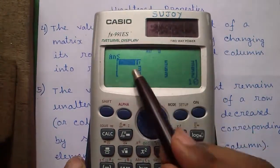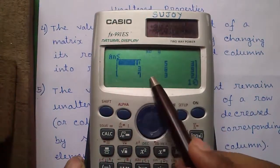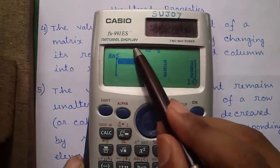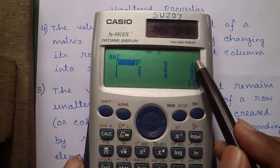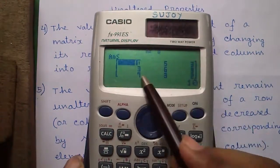This is called row 1, this is row 2 and this is row 3. Similarly, this is called column 1, this is column 2 and column 3. So these are 3x3 matrix with 3 rows and 3 columns.